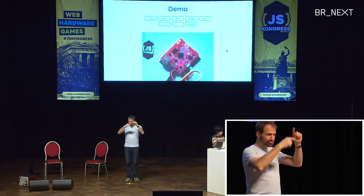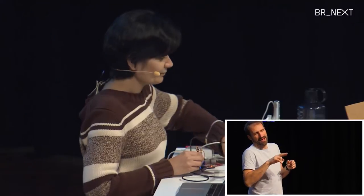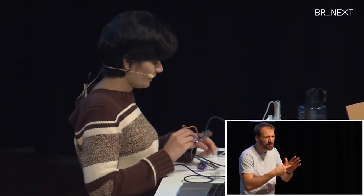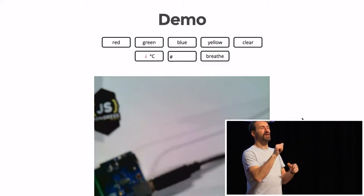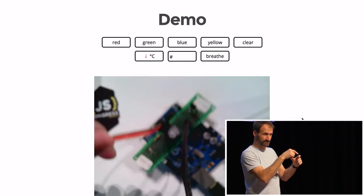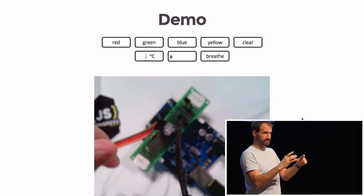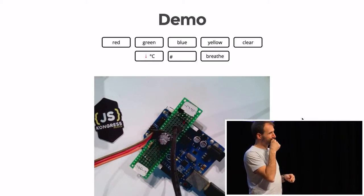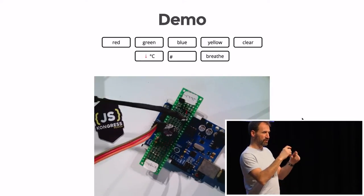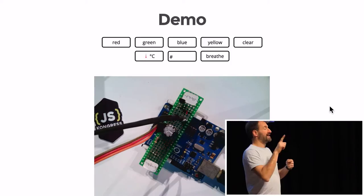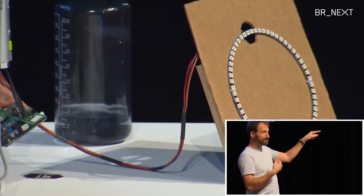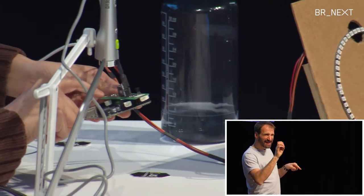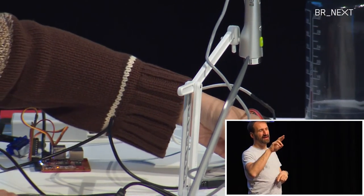Here's the Arduino board connected to an LED ring. Notice the TX and RX LEDs on the board. TX stands for transmission and RX for reception — meaning data being transmitted to and received from the host machine. Now let's turn up the red color and watch what happens to the RX LED.